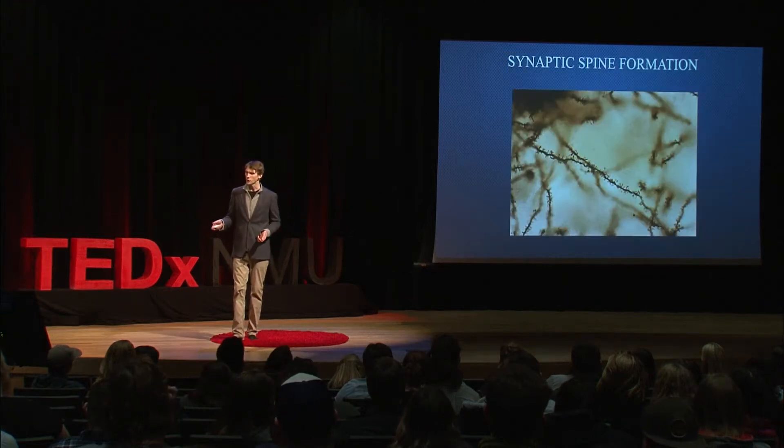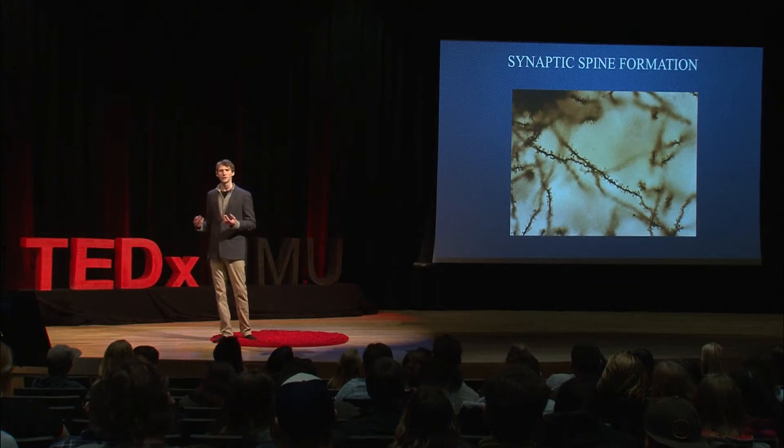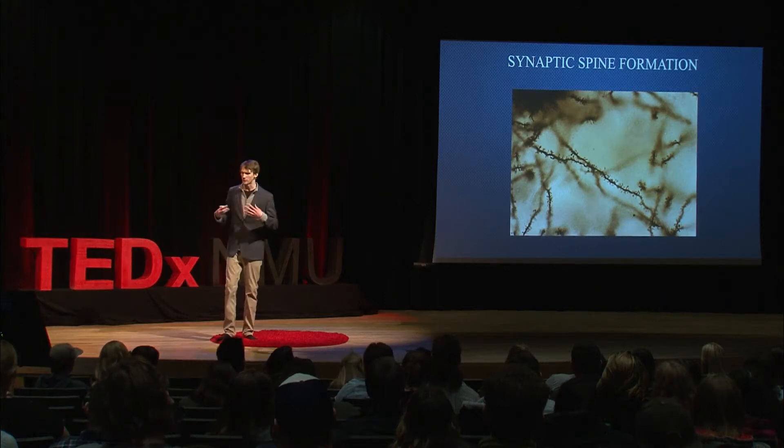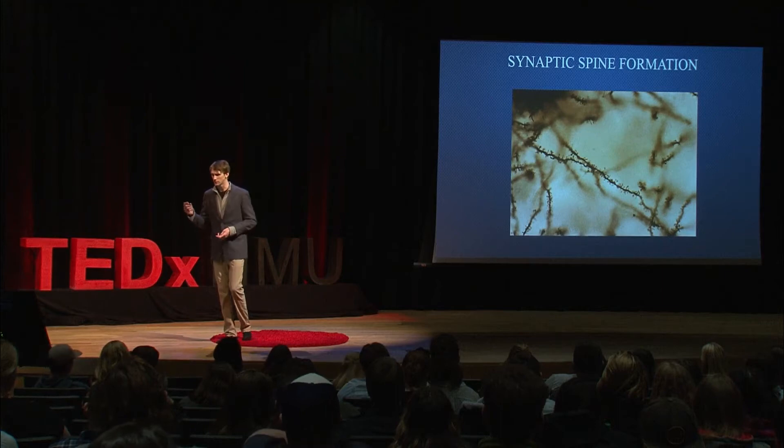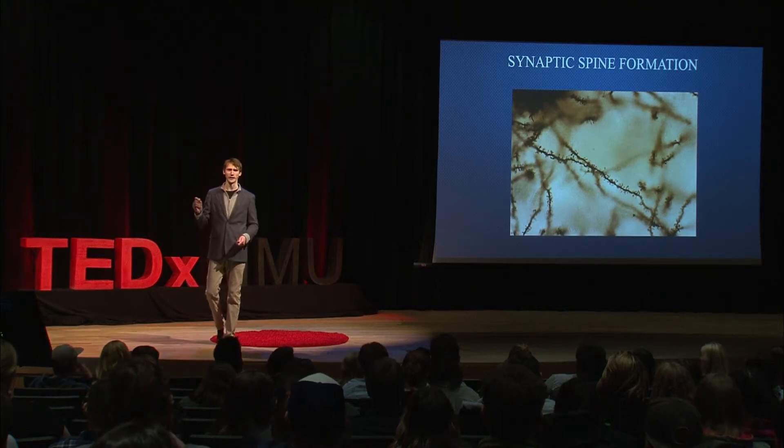Neurotrophins are involved in the development of these arborizations and dendrites, specifically dendritic spines. These little spines coming off the dendrites are the location of synaptic formation — the connections between neurons — where neurotransmitters are signaled and neurons can communicate. BDNF is involved in the formation of these dendritic spines, which kind of resemble mushrooms.